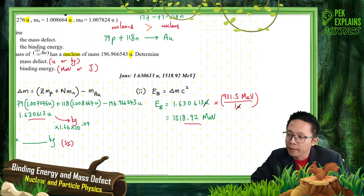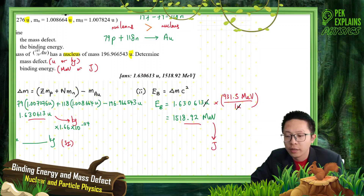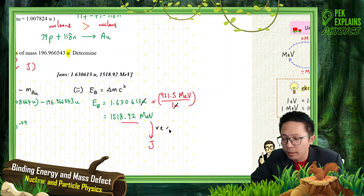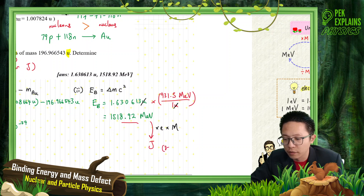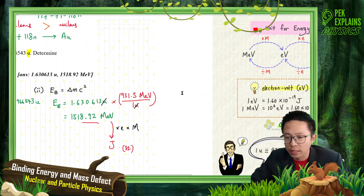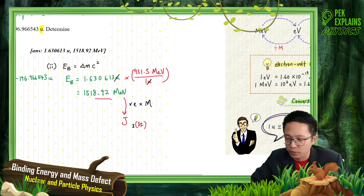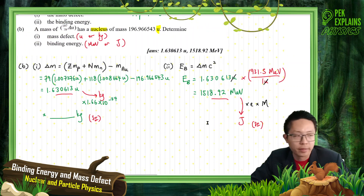If you want to convert to joules, multiply by mega and the electron charge to get the unit in joules, which is the SI unit. To convert MeV to joules, multiply by mega and the electron charge. That gives you the answer in joules. That's all — let's move on to the next question.